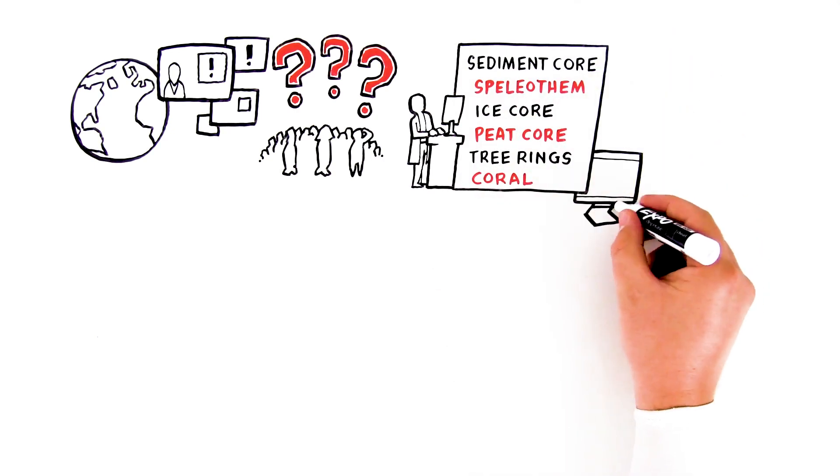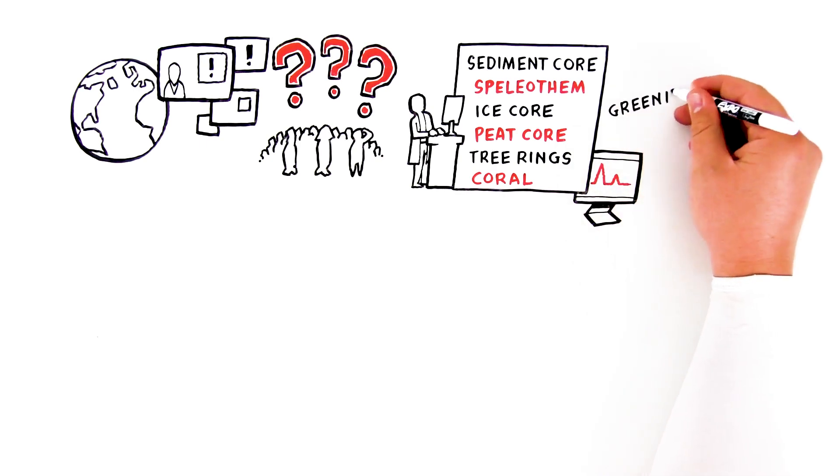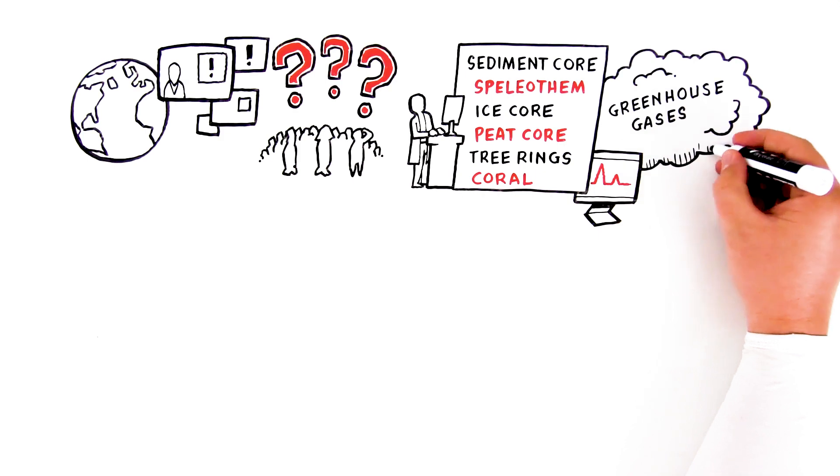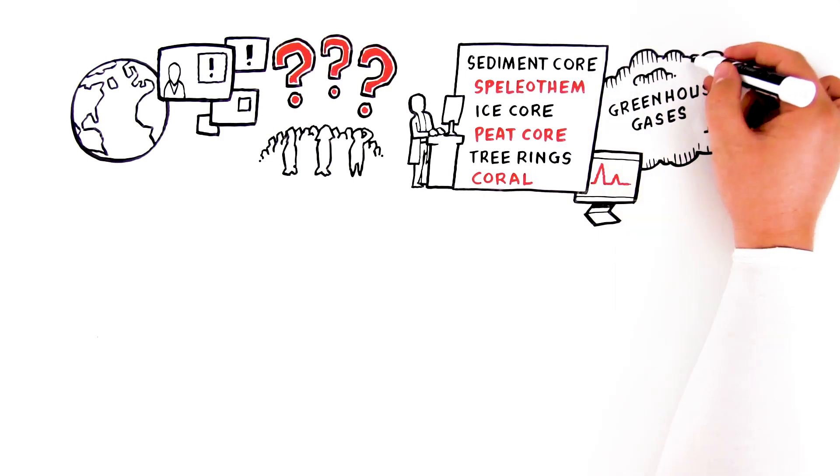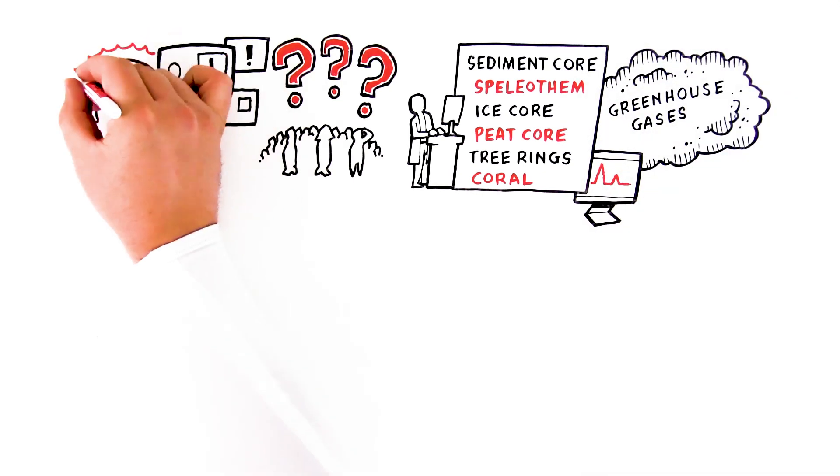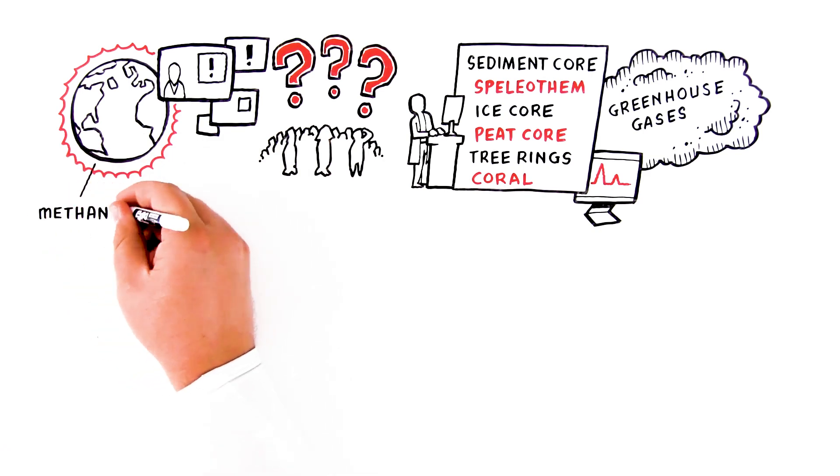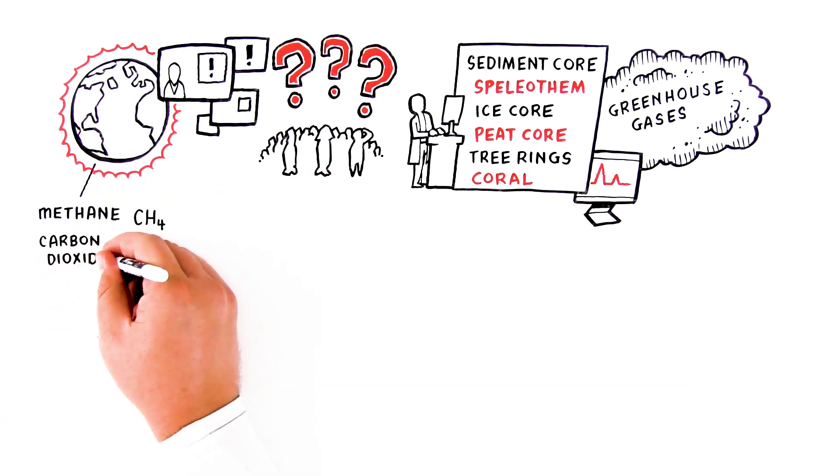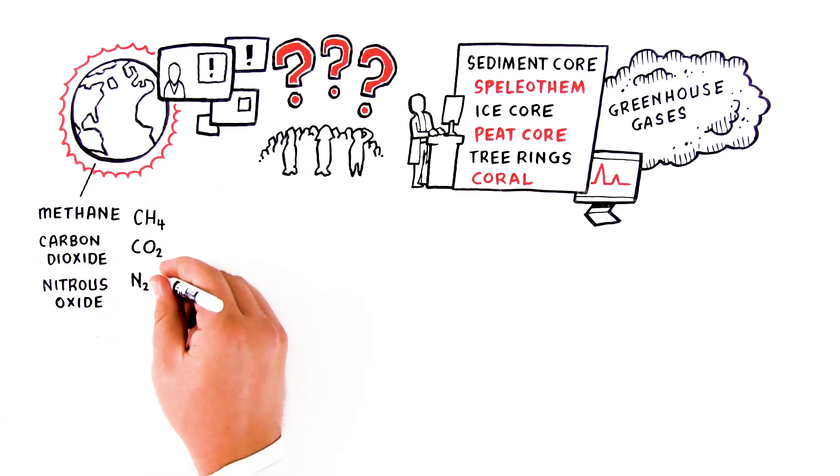From this analysis, we can measure important climate change factors such as the presence of greenhouse gases. We know the correlation between the greenhouse effect and global warming. With gas chromatography, we can divide it into methane (CH4), carbon dioxide (CO2), and nitrous oxide (N2O).